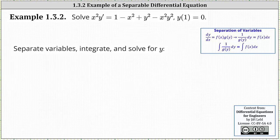It doesn't look like it, but we can actually solve this differential equation using the technique of separation of variables, meaning we can write the given equation in the form dy/dx equals f of x times g of y, where the right side is a function of x times a function of y. Looking at the differential equation, we have x squared on the left and a sum of four terms on the right, so it doesn't appear separable — but we actually can if we factor the right side.